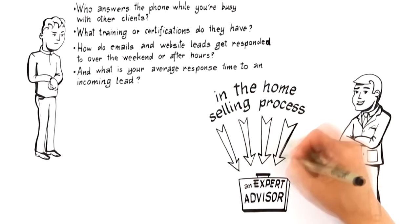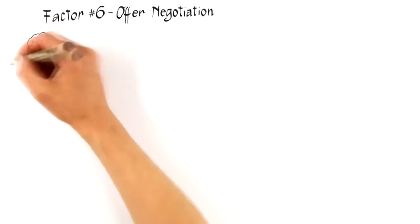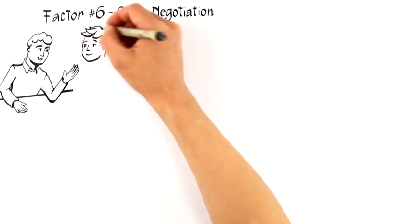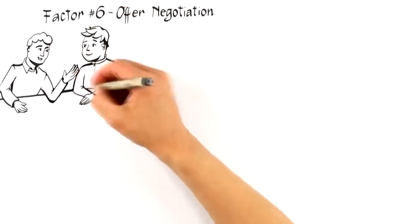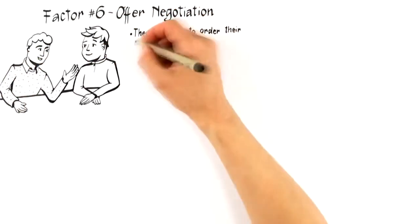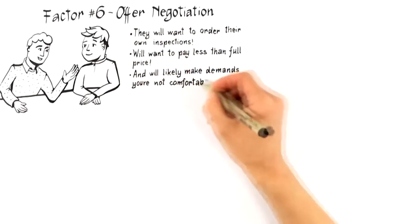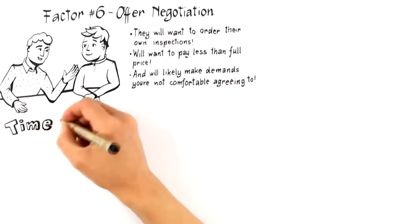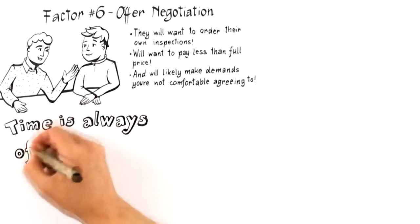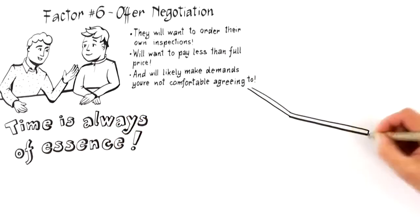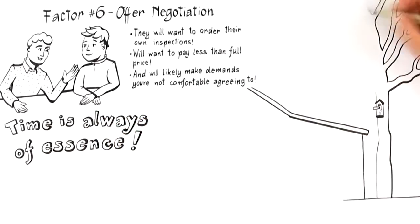All right, the next to last factor that influences the likelihood you get top dollar for your home is factor number six, offer negotiation. Regardless of how well a home is positioned to attract the perfect buyer, they will want to order their own inspections, will want to pay less than full price, and will likely make demands you're not comfortable agreeing to. Therefore, not enough can be said about hiring an expert who can negotiate an outcome that serves your best interests.